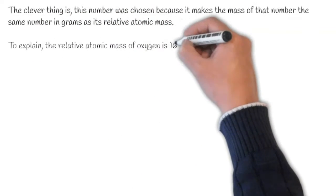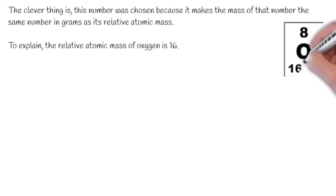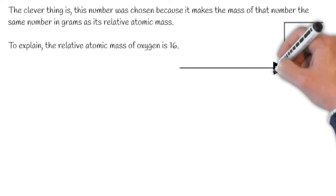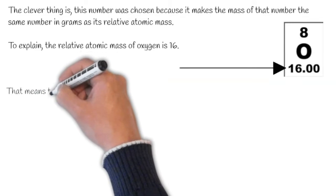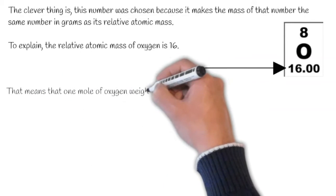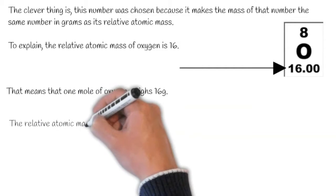The relative atomic mass of oxygen is 16. We can find this in the periodic table just here. That means that one mole of oxygen weighs 16 grams.